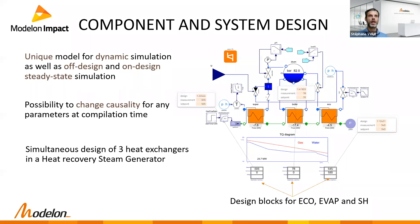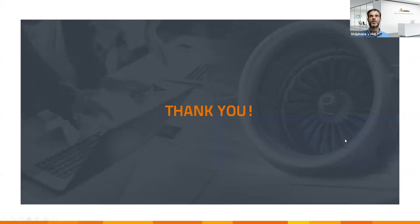In that formulation, we simultaneously design the three heat exchangers — the superheater, the evaporator, and the economizer — for a specific set of boundary conditions defined at the system level. With that, the energy update is complete. Thank you everyone for listening, and we are ready to answer any questions you may have.